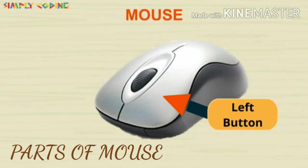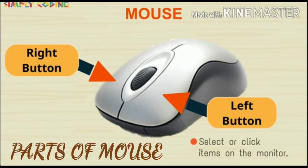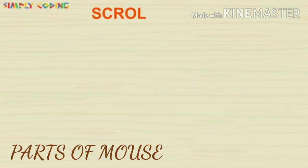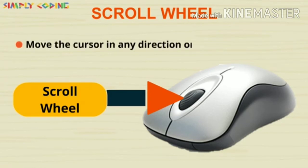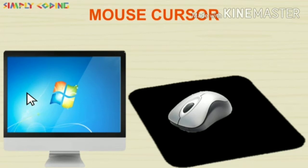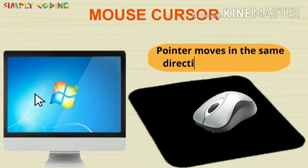A mouse typically has two buttons — left and right. The left button is used to select or click items on the monitor, and the right button helps to perform some quick tasks on the monitor. There is a scroll wheel in the center which is used to move the cursor in any direction on the monitor. The mouse itself moves to control the mouse pointer on the monitor.